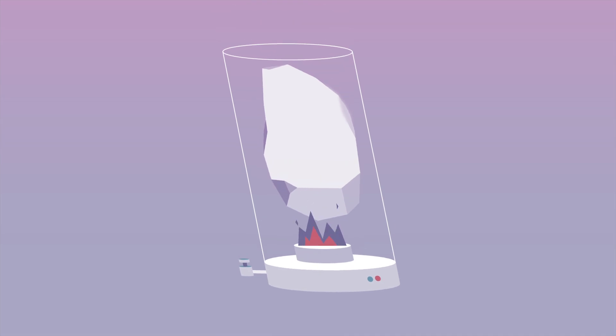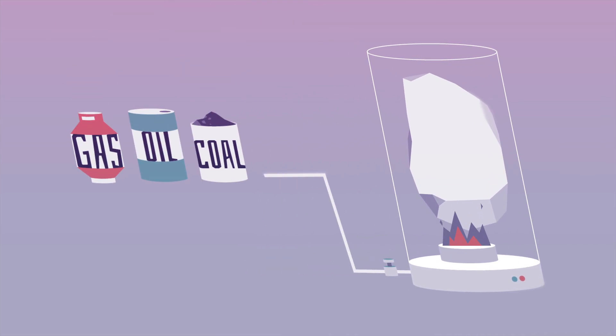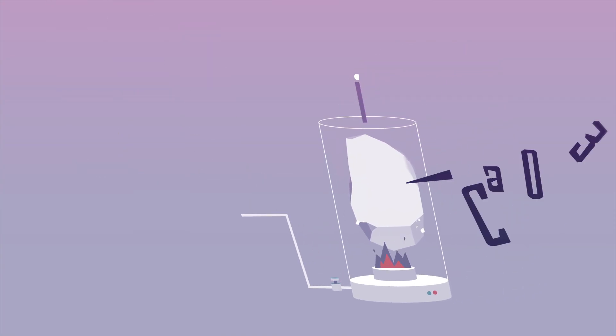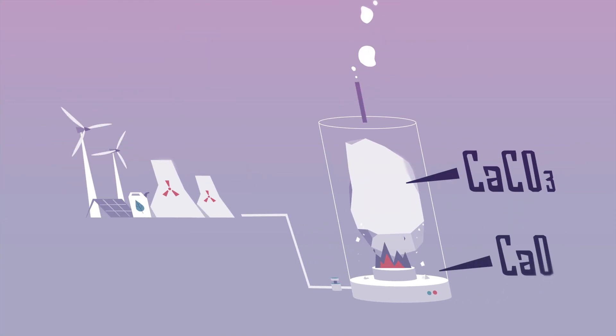Cement manufacturing also produces greenhouse gas emissions by burning fossil fuels to heat the limestone. Heating the limestone with clean electricity or alternative fuels instead would eliminate those emissions.